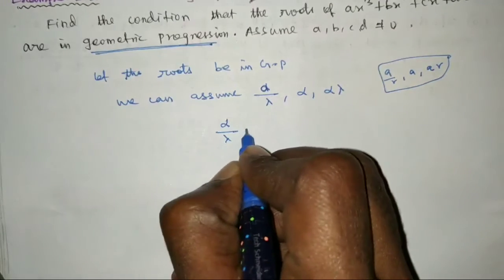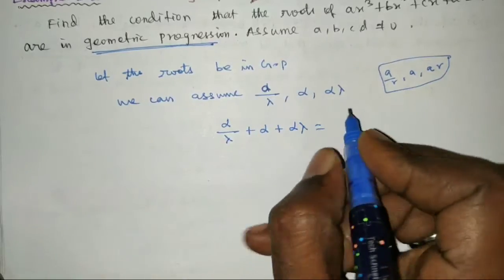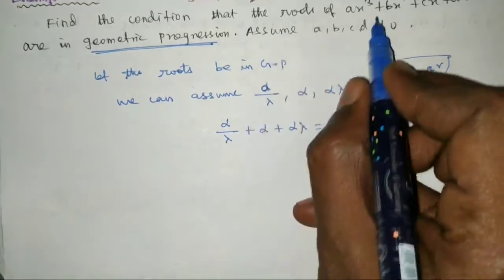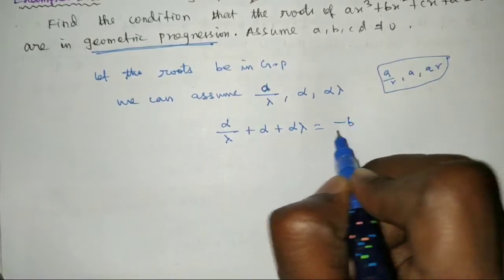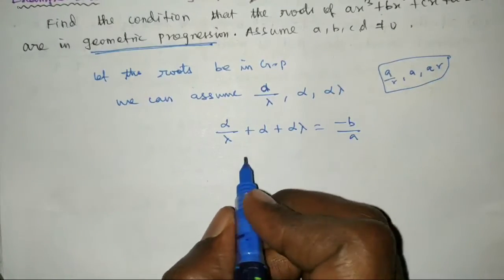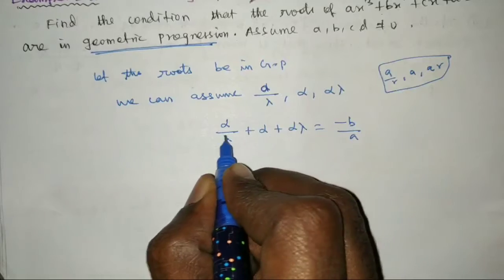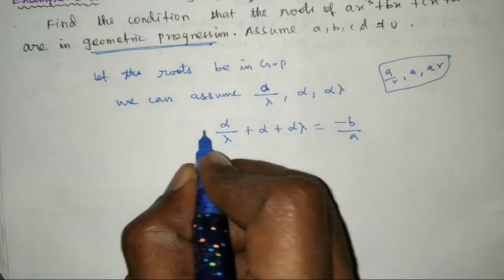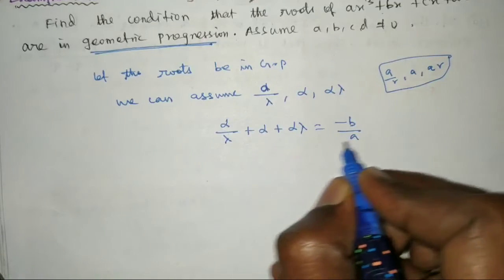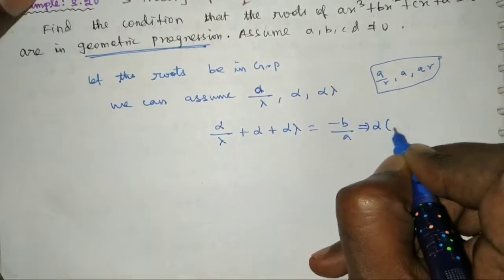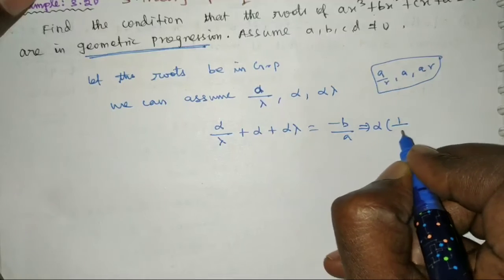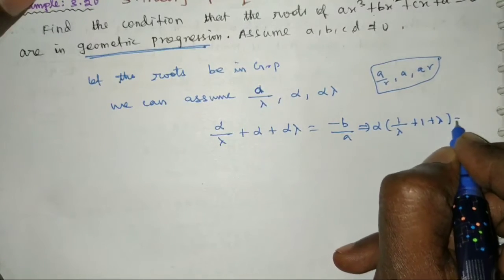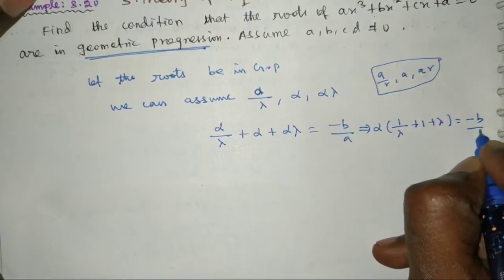By Vieta's formulas, the sum of roots α/λ + α + αλ equals −b/a. We can factor this as α(1/λ + 1 + λ) = −b/a.